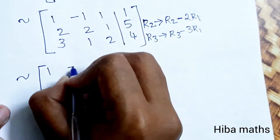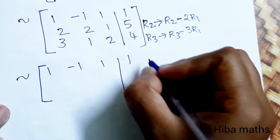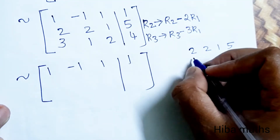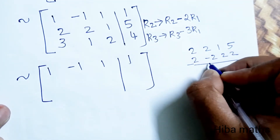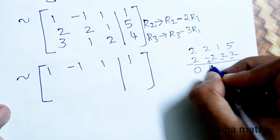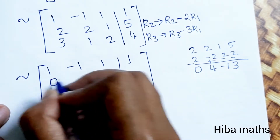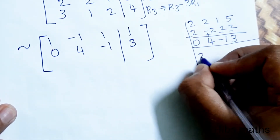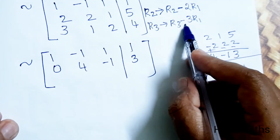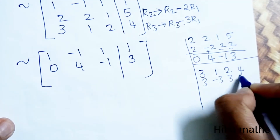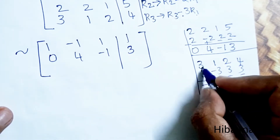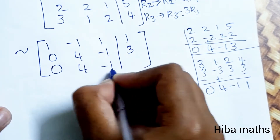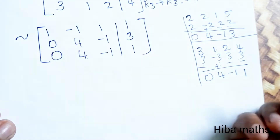After the row operations, the next line gives row 1: 1, -1, 1, 1. For R2: 2, 2, 1, 5 minus 2 times R1 (2, -2, 2, 2) gives 0, 4, -1, 3. For R3: 3, 1, 2, 4 minus 3 times R1 (3, -3, 3, 3) gives 0, 4, -1, 1. Since R2 and R3 have the same leading entries, we proceed.